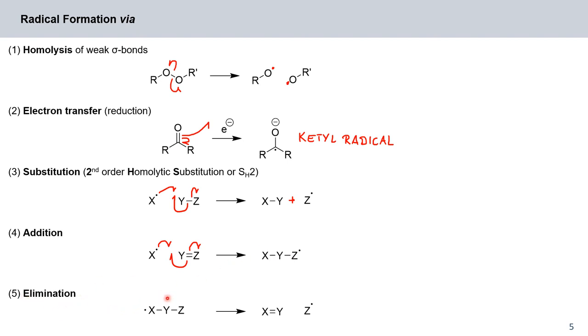And in reverse of this process, we have elimination. Also homolysis of the Y-Z bond. So in this case, the radical on X recombines with an electron from the Y-Z bond to form a new XY double bond and a free Z radical.